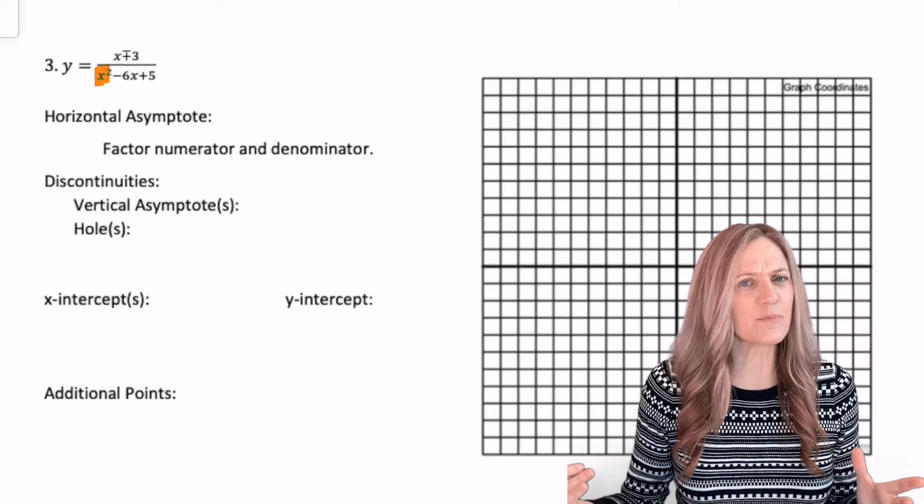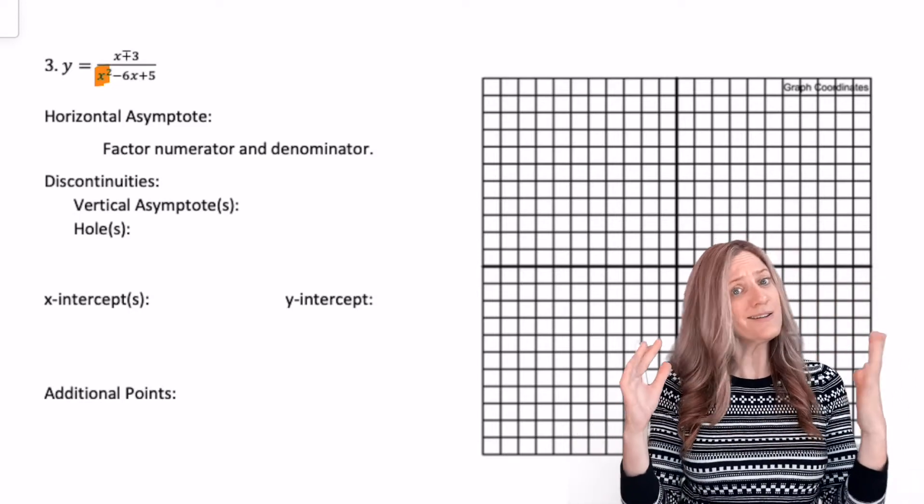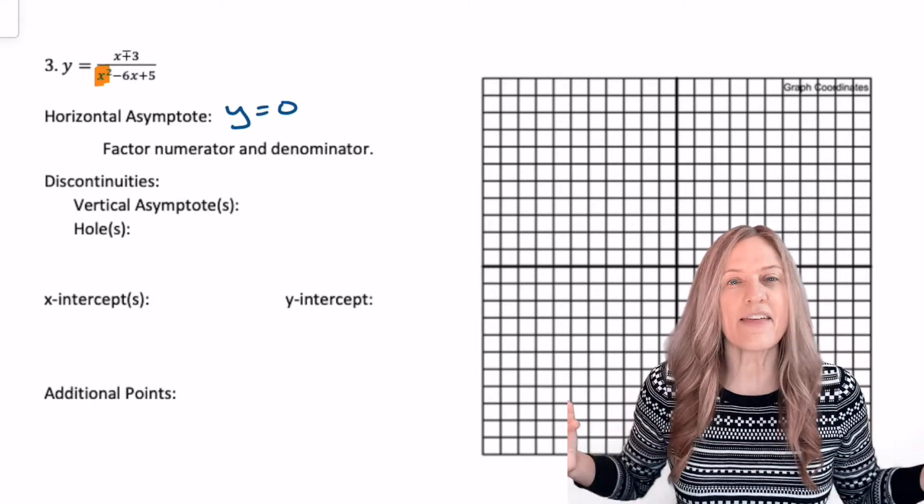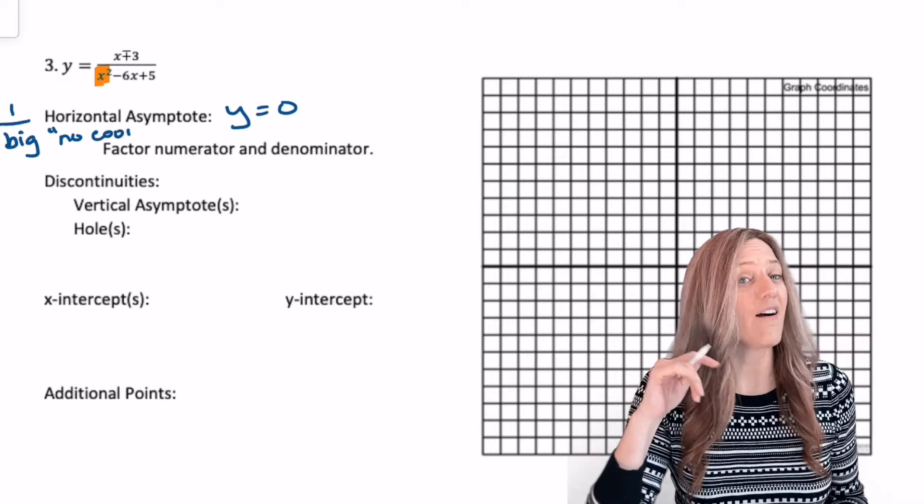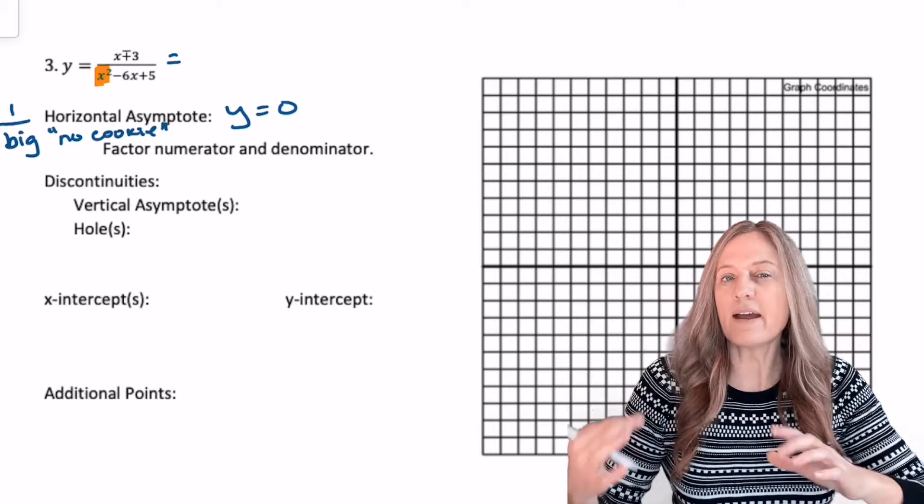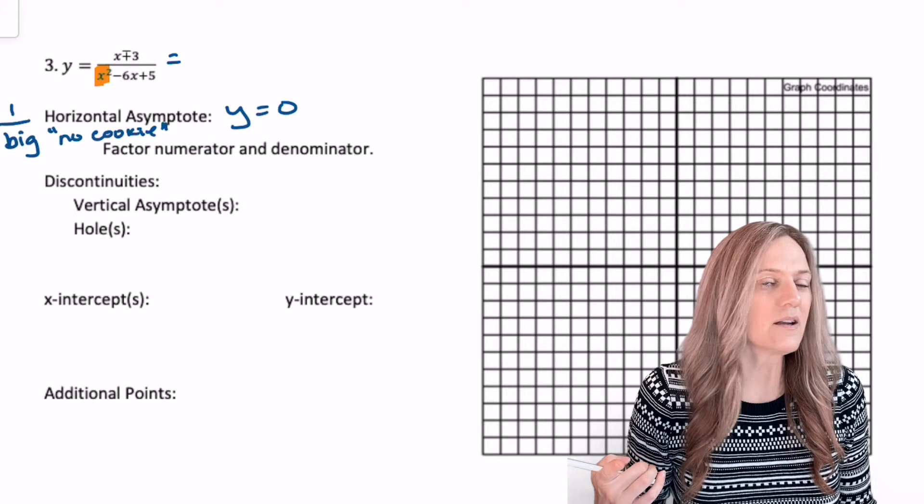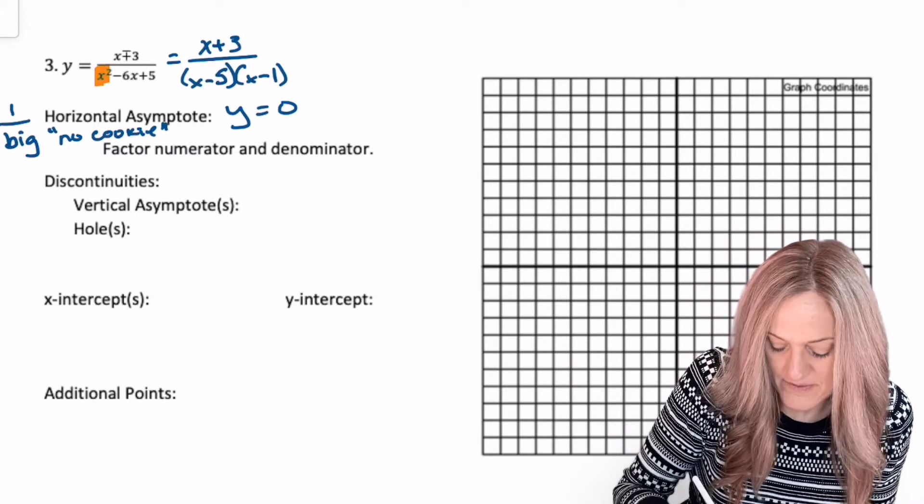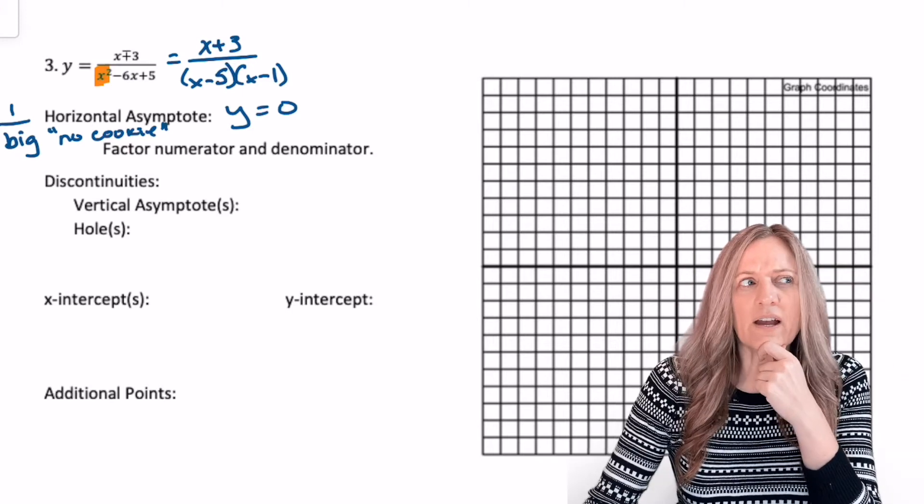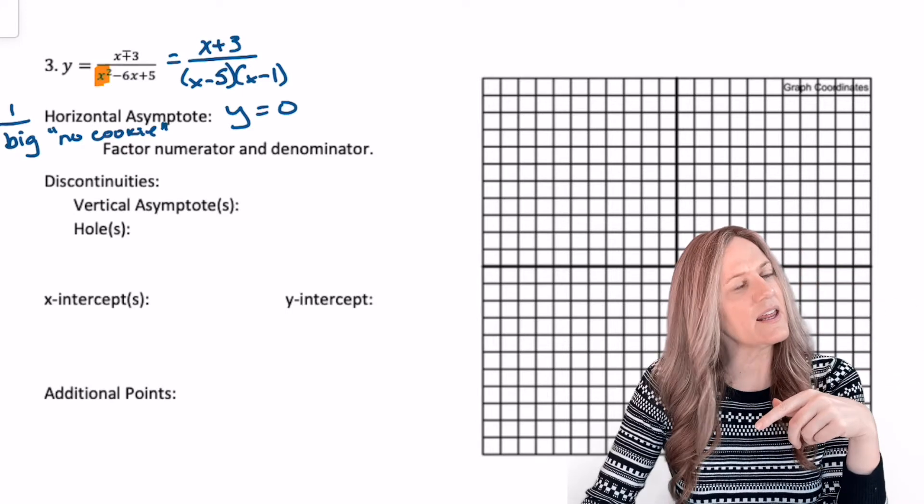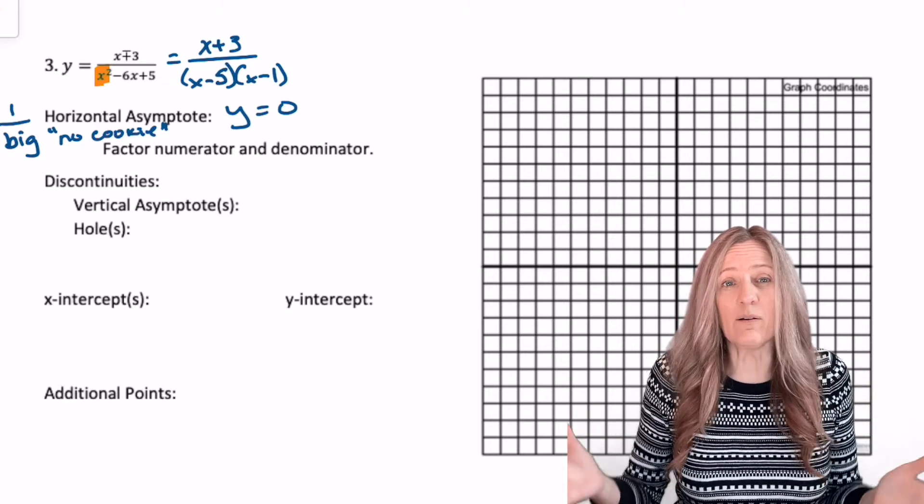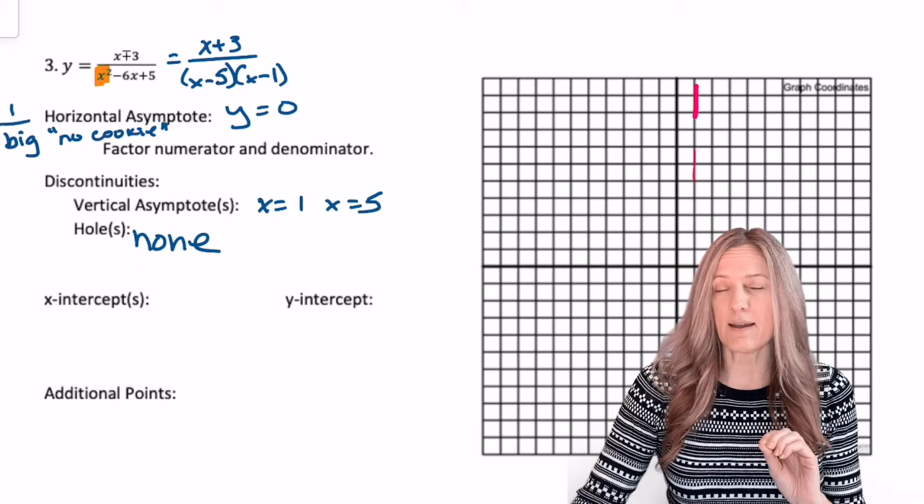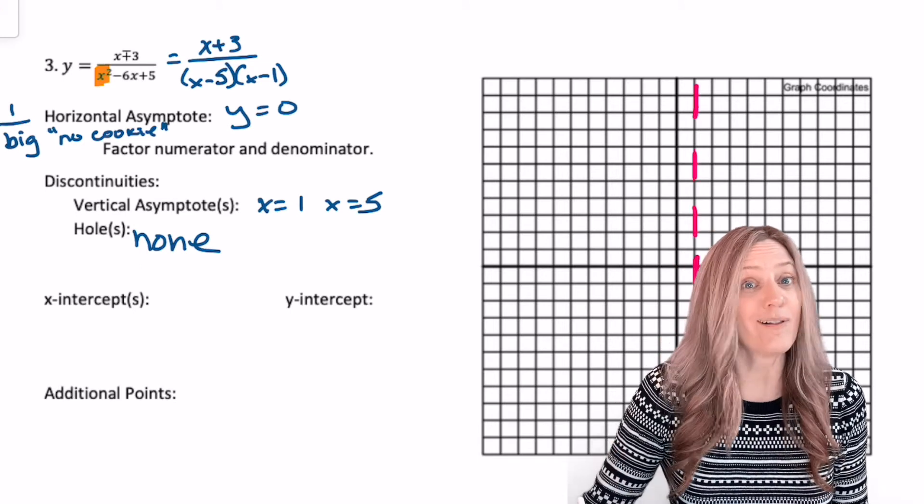These two graphs look kind of similar. I wonder if they all turn out looking like this. Example three. Horizontal asymptote. Where's the power? In the denominator. X squared in the denominator. Okay. So that's one over big. That means no cookie for you. Our horizontal asymptote y equals zero. Next, we're going to factor the numerator and denominator. Well, just the denominator and see which types of discontinuities we have. Hmm. Thou shalt not divide by zero. So x can't equal five and x can't equal one, but none of them divide out. So I guess I have two vertical asymptotes. I'm going to go ahead and sketch my horizontal and vertical asymptotes.